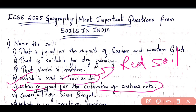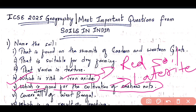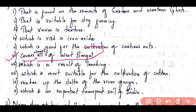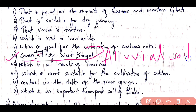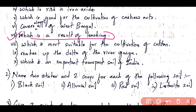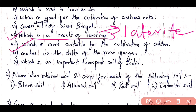Question 5: the soil which is good for the cultivation of cashew nuts is laterite soil. Question 6: the soil that covers almost all of West Bengal is alluvial soil. Question 7: the soil which is a result of leaching is laterite soil — remember that answer.